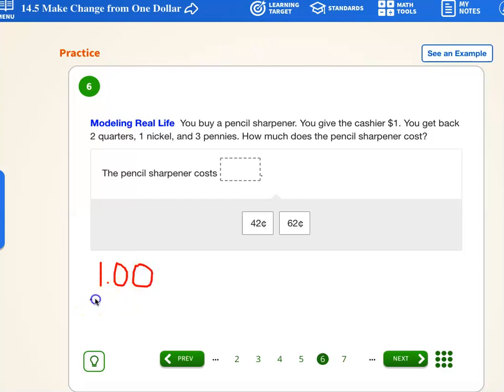Okay. And we took away some money and we ended up, he gave us back two quarters. So what's that? 25, 50. And then a nickel, it's 55, 56, 57, 58. So we ended up getting 58 cents back. Okay. How much did the pencil sharpener cost?